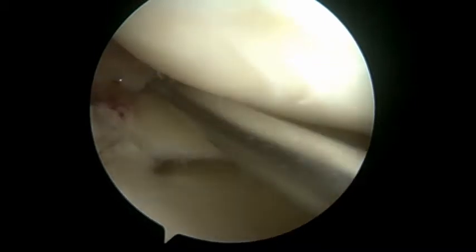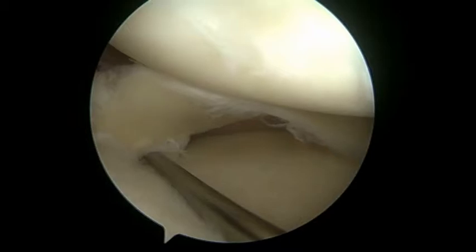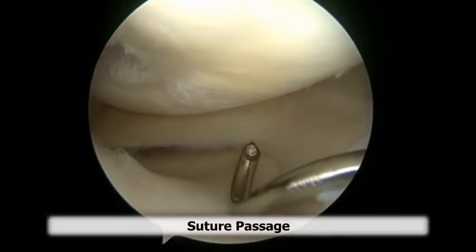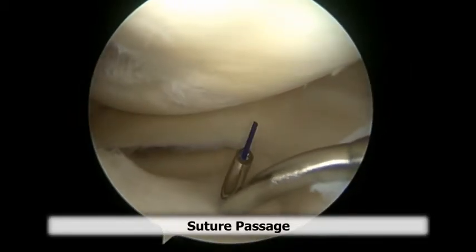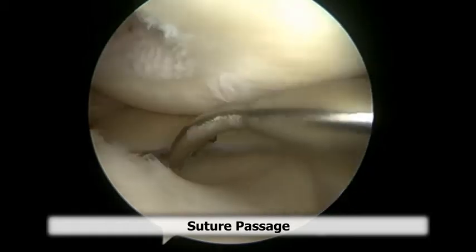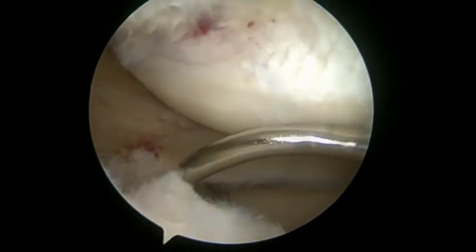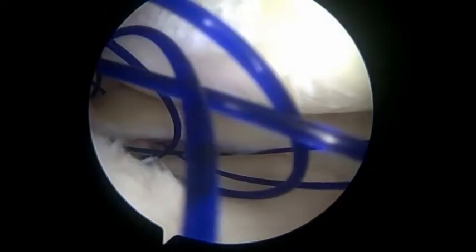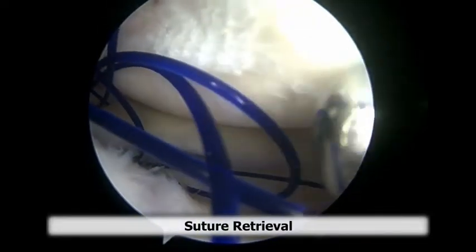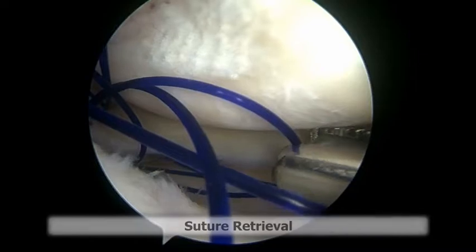A zero PDS will be used to shuttle the sutures through the meniscus. A standard curved suture passer is used to shuttle the PDS through the meniscus. Here you can see the free end of the PDS retrieved through the medial portal.